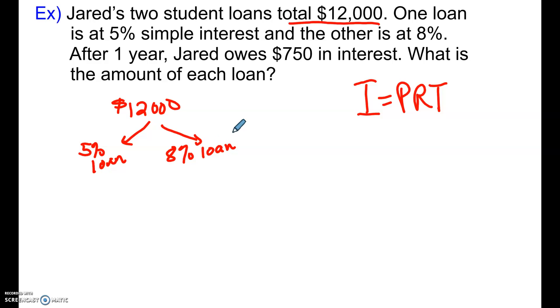All right, we've been borrowing it for a year, and at the end we're going to have $750 in interest, and our job is to determine how much was borrowed at each of those rates.